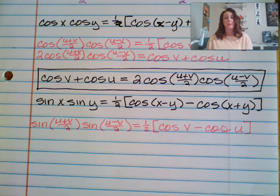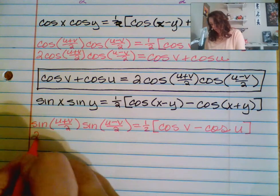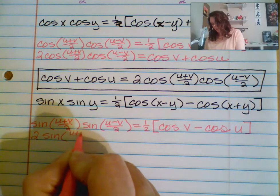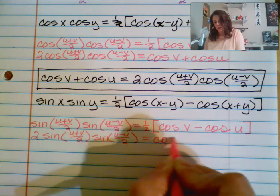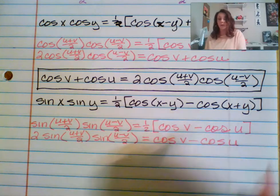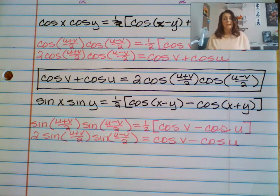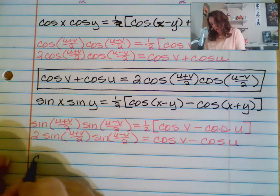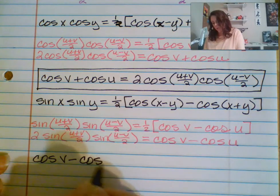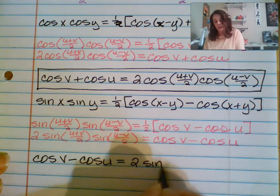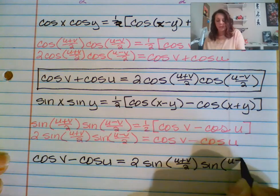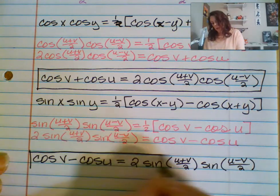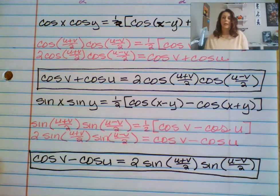Using the same process, we multiply both sides by 2. We get 2 times sine of (u plus v)/2 times sine of (u minus v)/2 equals cosine of v minus cosine of u. Rewriting with the difference on the left: cosine of v minus cosine of u equals 2 times sine of (u plus v)/2 times sine of (u minus v)/2. That gives us the second of the four sum-to-product identities.